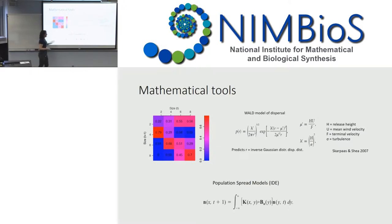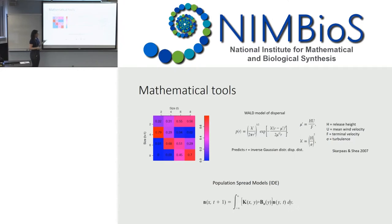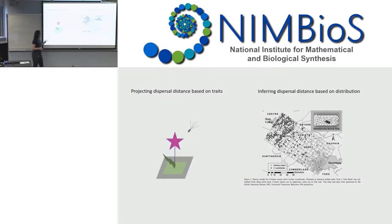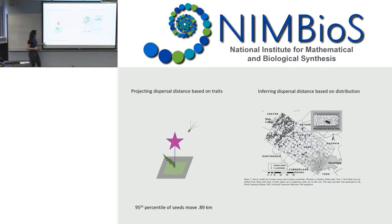We can combine all this information — it's sort of like a ballistic model but with a few extra parameters, like turbulence — to actually produce a dispersal kernel and provide estimates of population spread. Starting from first principles about just the characteristics of a plant, we can project dispersal distance based on traits. When we build a dispersal kernel based on just what we know about the plant species, we can predict that the 95th percentile of seeds in Pennsylvania should move about 0.89 kilometers.